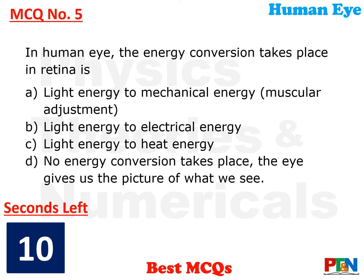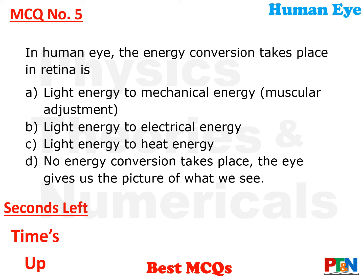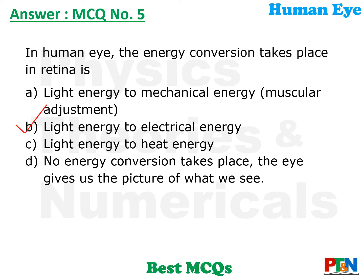Next MCQ. The retina itself does not give us the picture — what type of energy conversion takes place? 10 seconds time. The answer is option B: light energy to electrical energy. The light-sensitive cells on the retina convert light to electrical signals which go to our brain, which frames the image for us.